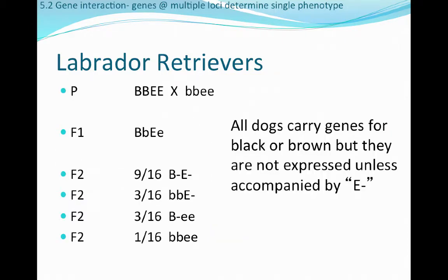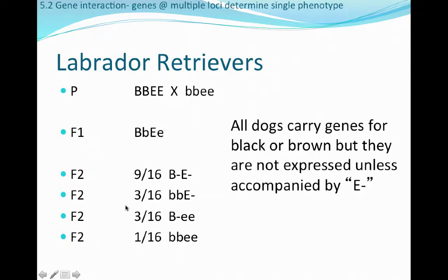Working through the inheritance pattern: if we cross a homozygous dominant individual with a homozygous recessive individual, the F1 generation is 100% heterozygous. Allowing those F1 individuals to interbreed produces an F2 generation with a 9:3:3:1 genotypic ratio. All dogs carry genes for the black or brown trait, but those traits won't be expressed unless accompanied by big E. If homozygous little e, little e, it doesn't matter what is at the first locus — those individuals will be yellow.